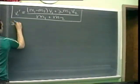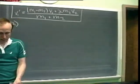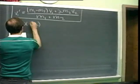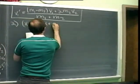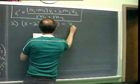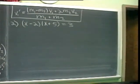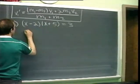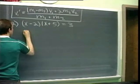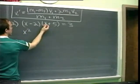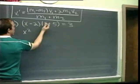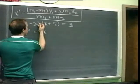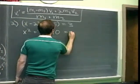Problem number two says solve for X, and they write: X minus 2 times X plus 5 is equal to 3. Let's multiply this side out. I get X times X, that's X squared. I've got minus 2X plus 5X, that's plus 3X. And then minus 2 times 5 is minus 10, all equal to 3.